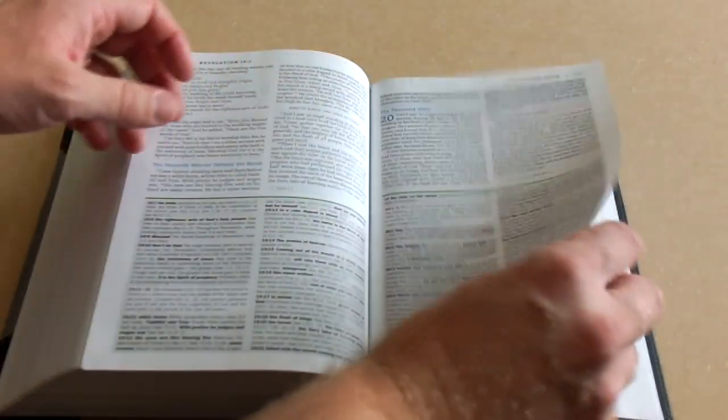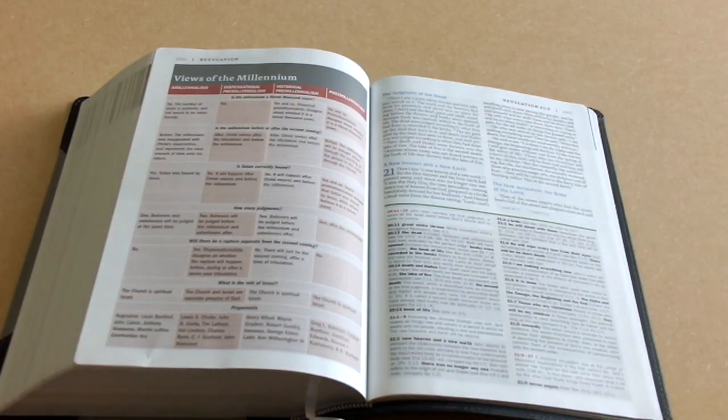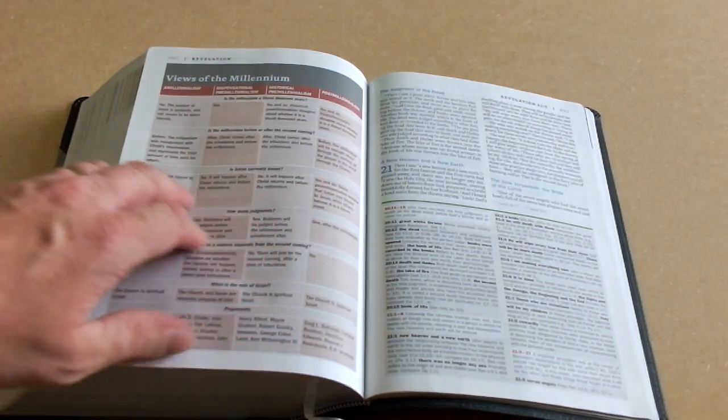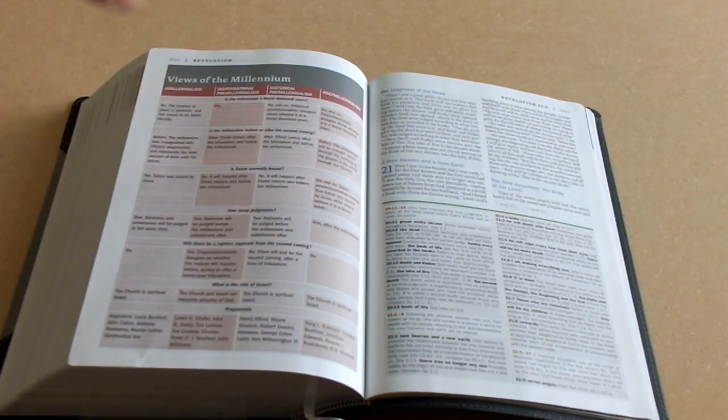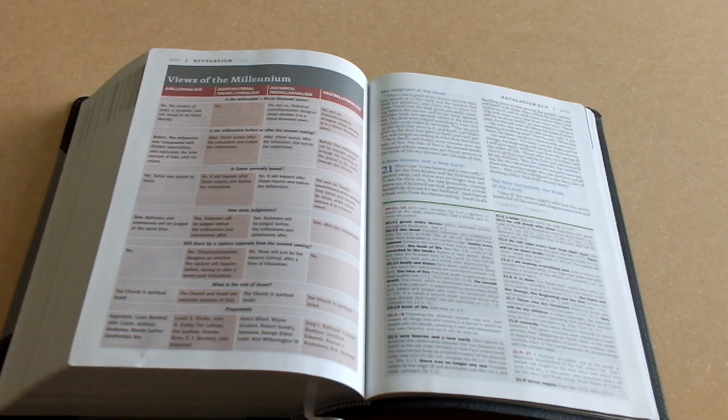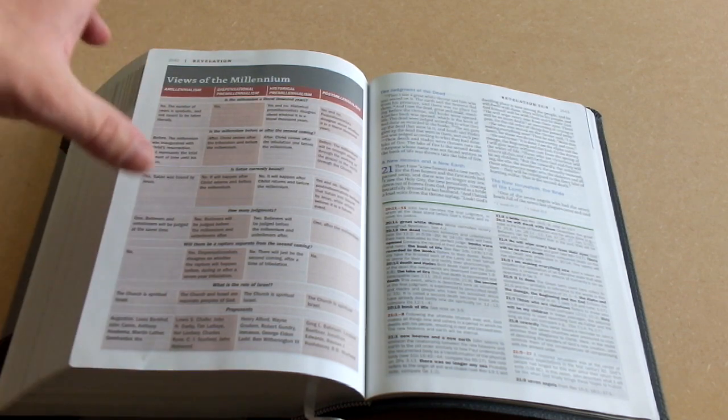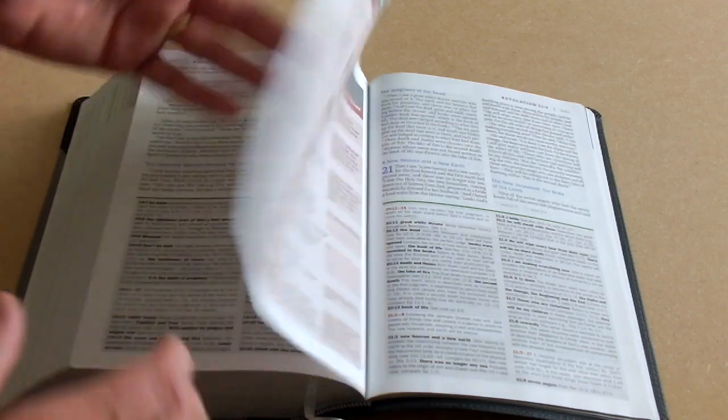Let me just see if I can find that. So there we go. You've got different views of the millennium there, a chart for the amillennialism, dispensation or premillennialism, and so on and so forth. And it gives you the differences, what they believe and things like that.